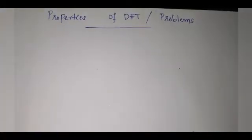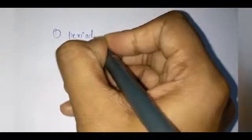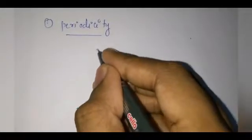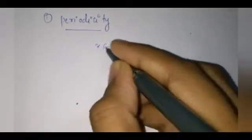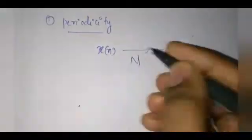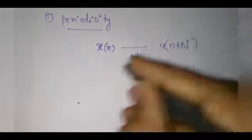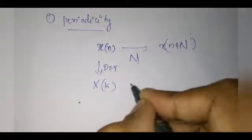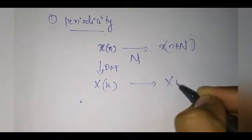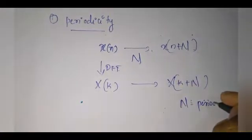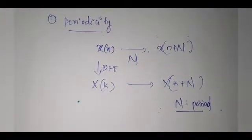The first property is periodicity. Periodicity states that if the input x(n) is periodic with a period of capital N, that is x(n) = x(n + N), then the DFT X(k) is also periodic, that is X(k) = X(k + N), where N is the period. This property is very much useful in doing most of the problems.